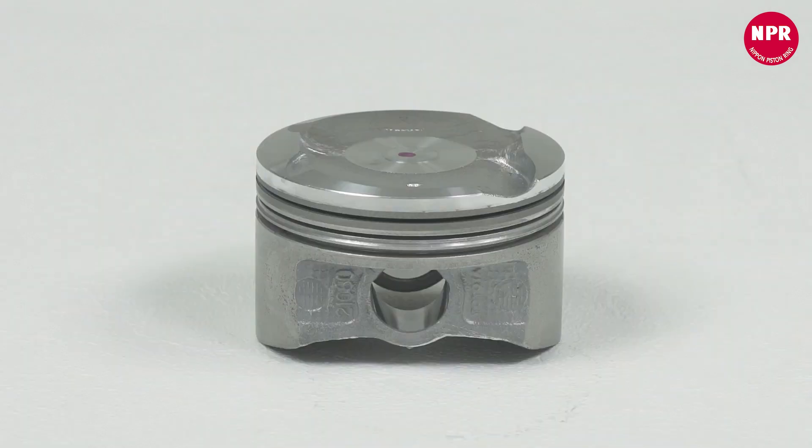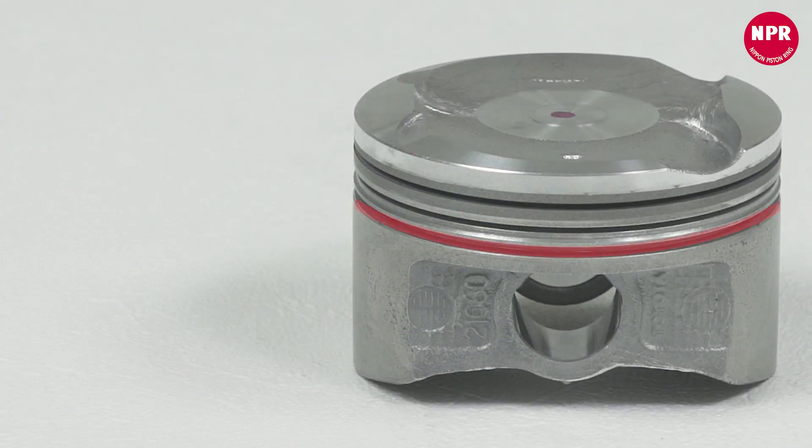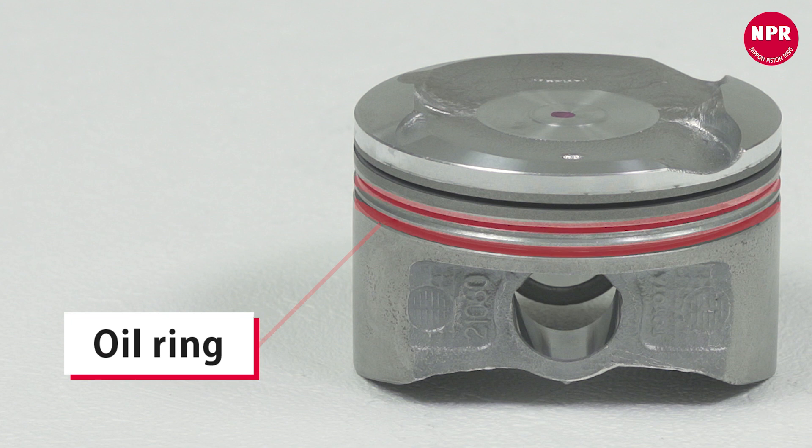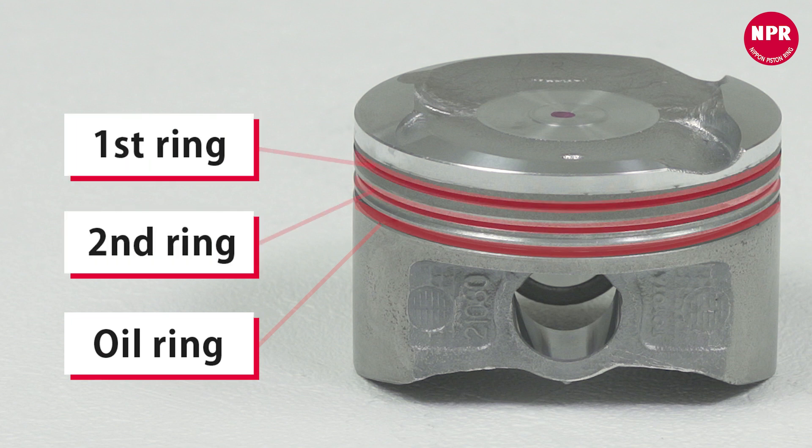You'll be attaching the rings to the piston, placing them in the ring grooves. First, you'll start with the oil ring, then the second ring, and then the first ring.